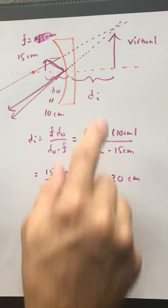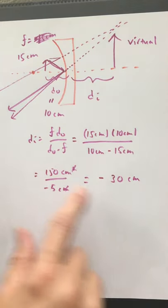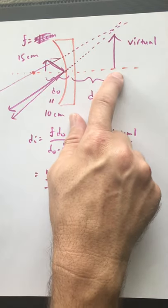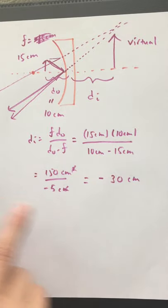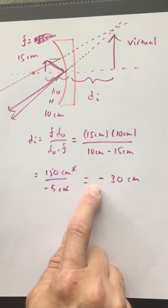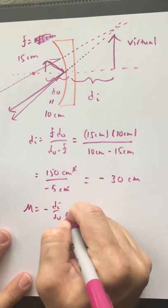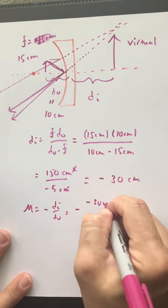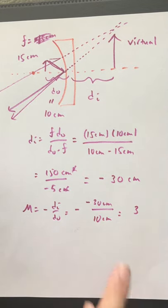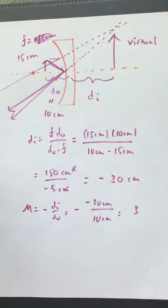Check the qualitative results. Does the image look farther away from the mirror than the object? Yes — check. Looks farther away than the focal point — check. The negative tells you the image is on the opposite side of the mirror from the object. For a lens, that meant it was on the same side, but here's that reversal since a mirror reflects and a lens transmits. Check. Let's check the magnification: minus DI over DO. Minus DI is minus 30 over 10 centimeters gives me positive 3. Positive tells me it's upright — check. 3 tells me it's bigger — check.